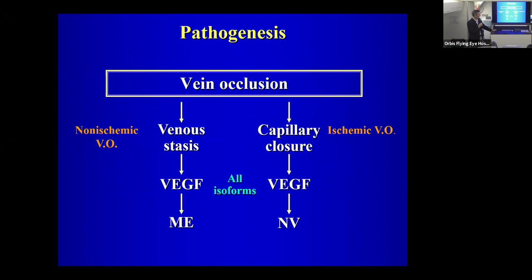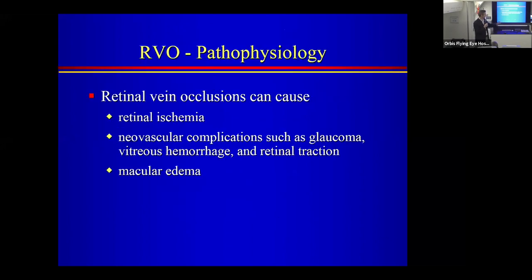Pathogenesis differs between non-ischemic and ischemic vein occlusions. With a partial occlusion — venous stasis — there is some VEGF produced and you get macular edema. With capillary closure or complete lack of blood flow, it's ischemic vein occlusion: higher VEGF production, macular edema, and neovascularization. Retinal vein occlusions can cause retinal ischemia, neovascular complications such as glaucoma, vitreous hemorrhage, retinal traction, and macular edema.